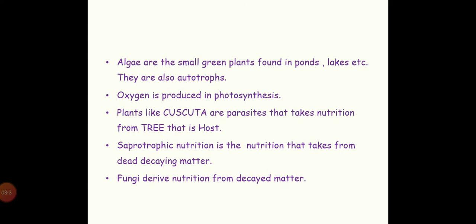Algae — where can you see algae, children? Near ponds, lakes, wherever water is stagnated, we can see algae. Algae are small green plants found in ponds and lakes and they are also called autotrophs. They are unicellular green organisms that can prepare their own food. Because of algae, we are getting 87% of the oxygen for the whole world.